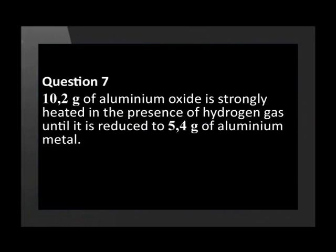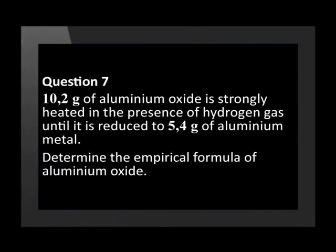10.2 grams of aluminium oxide is strongly heated in the presence of hydrogen gas until it is reduced to 5.4 grams of aluminium metal. Determine the empirical formula of aluminium oxide.